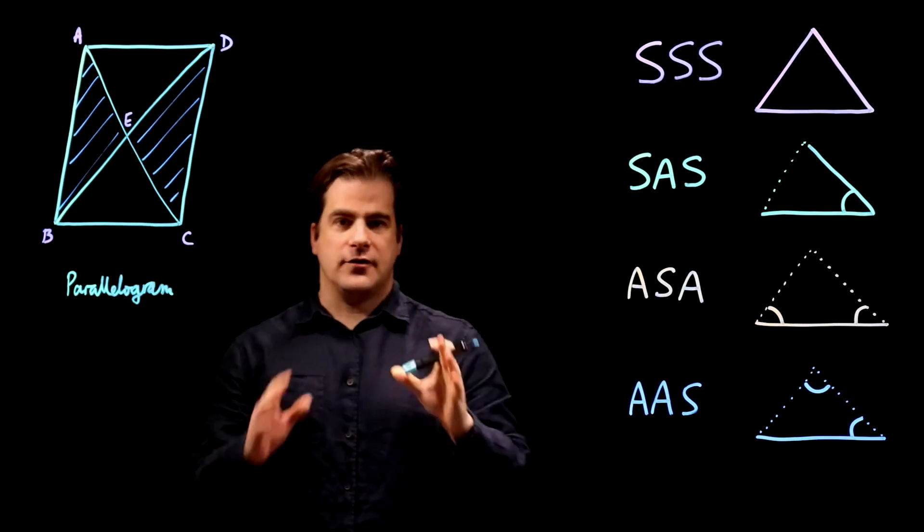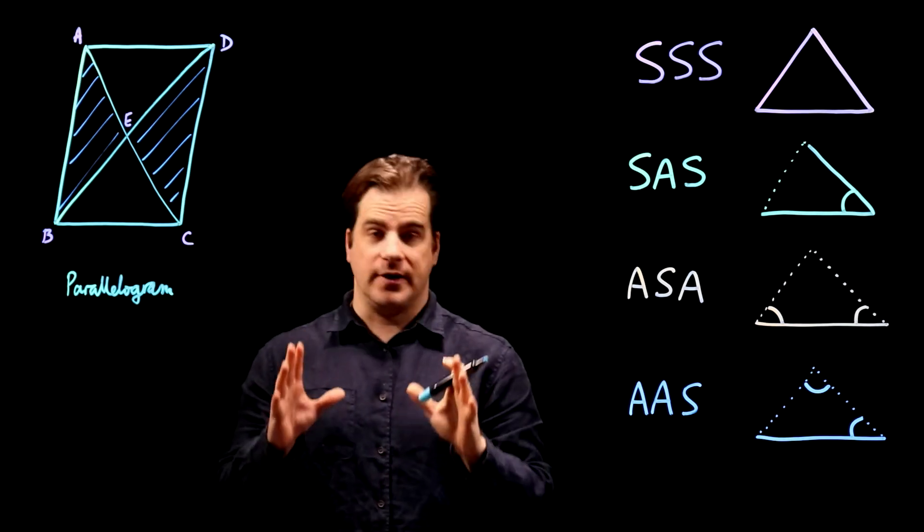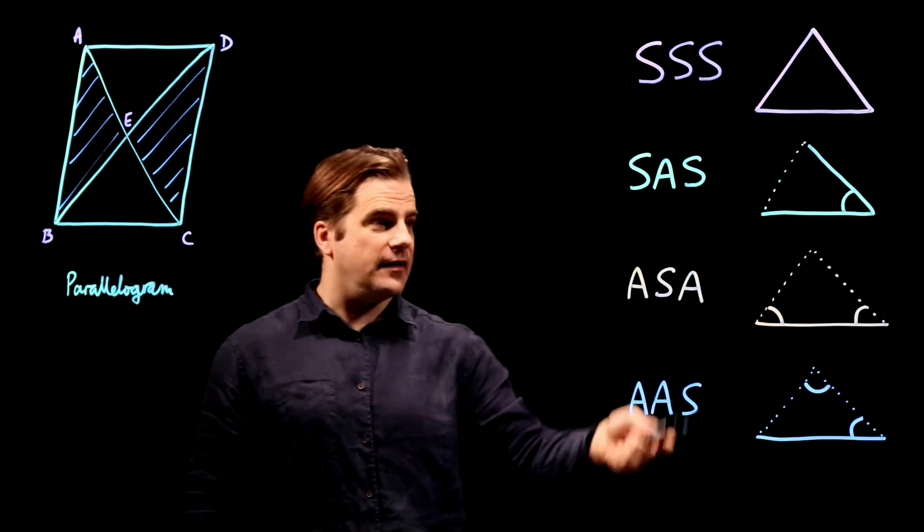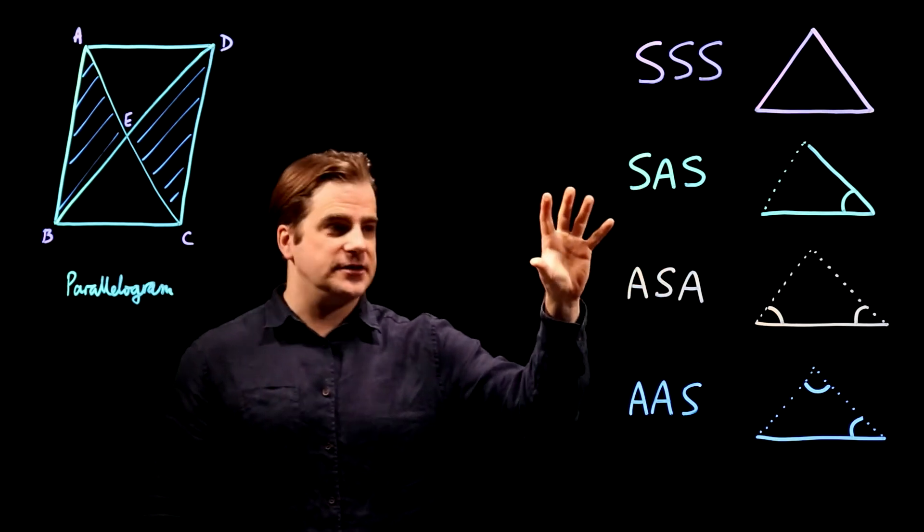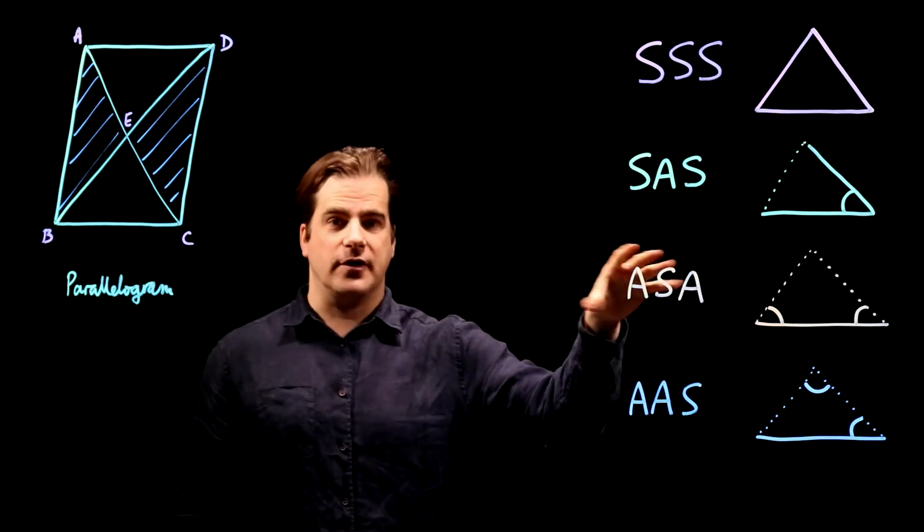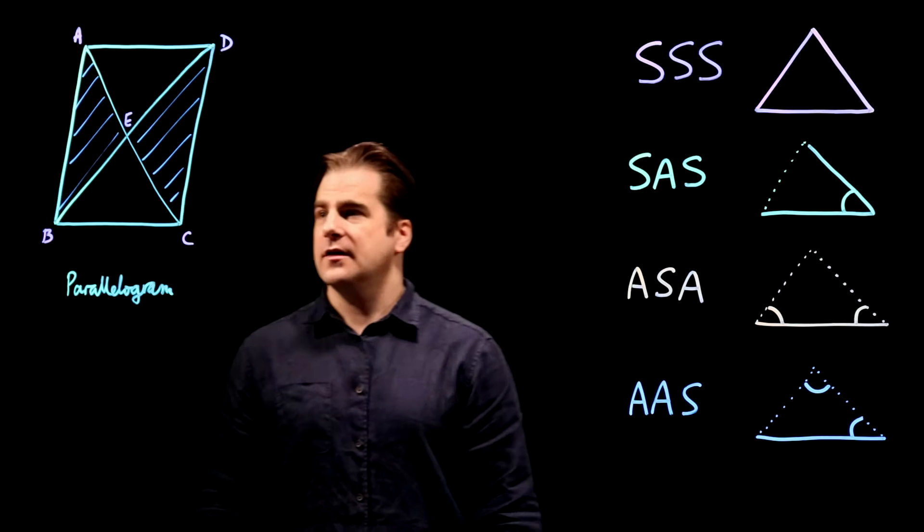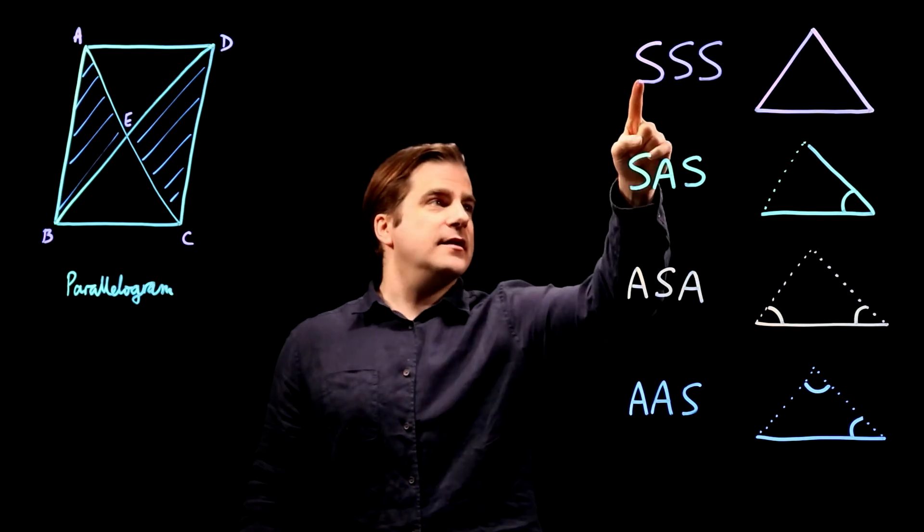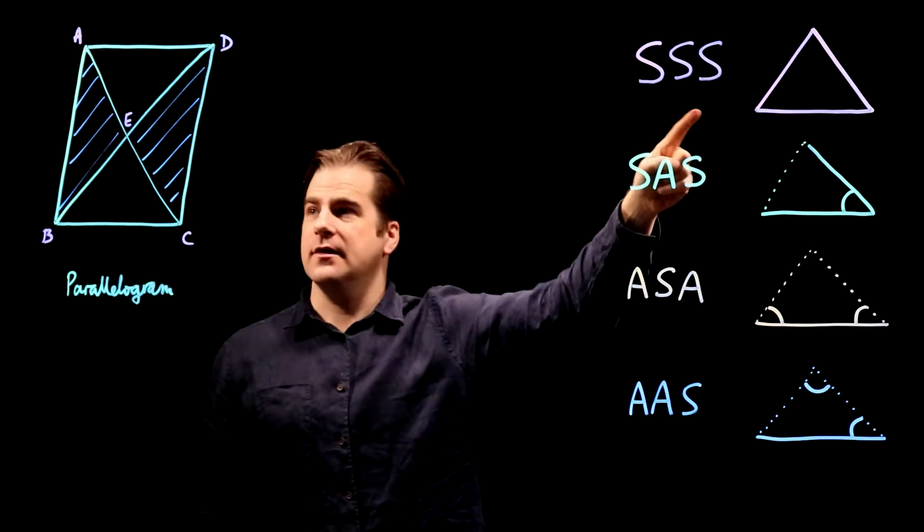I've done a video on the conditions necessary for congruency between two triangles, and I've left up the four conditions which prove that two triangles are congruent. If you can prove that these two triangles have three sides the same, then they're congruent.